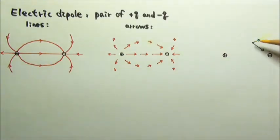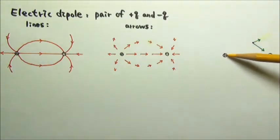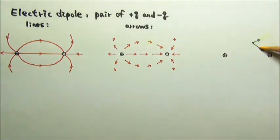Over here, the field produced by the positive q goes out of the positive charge. The field by the negative q goes into the negative charge. And since the negative q is closer, the field produced by it is stronger.